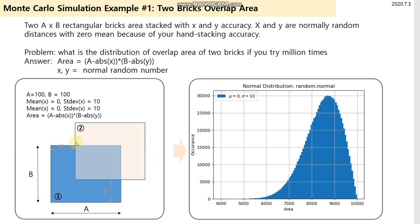If we try once, the area will be (A minus absolute X) times (B minus absolute Y). But what if we do this a million times?